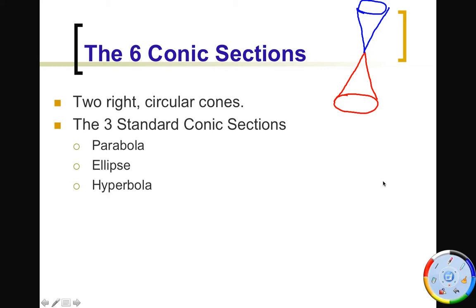I have a physical representation of this in my classroom, so you can take a look — I'll have it out hopefully tomorrow. Basically, if you slice this double cone parallel to its slant edge, you get a parabola. If you slice it at an angle cutting only through one cone, you get an ellipse. If you cut it vertically along the edge, you get a hyperbola. If you cut it parallel to the base, you get a circle. If you cut it right on the edge, you get a line, and if you cut through the center, you get a dot.